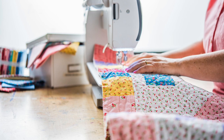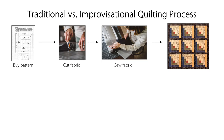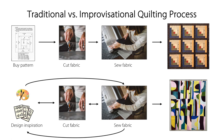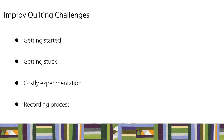We wanted to know if we could design a system to support this improvisational design approach. Whereas the process of making a traditional quilt involves following a mostly linear process, improv quilting is more iterative. Quilters start with some design inspiration, and then cycle through design, cutting fabrics, and sewing the final piece. From reading several popular books on improv quilting, we identified key properties of the technique and its challenges. These challenges include getting started, getting stuck, costly experimentation, and recording process.